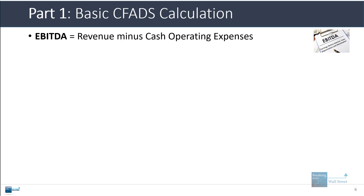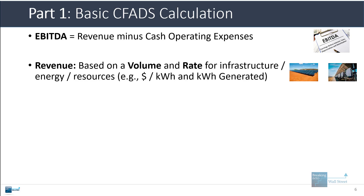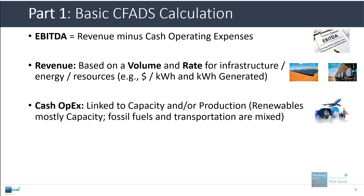At a basic level, EBITDA in project finance is defined as revenue minus the cash operating expenses of the project. Normally, revenue is based on some type of volume and rate if you're dealing with infrastructure, energy, or natural resources. For energy assets, it could be something like dollars per kilowatt hour times the kilowatt hours generated.